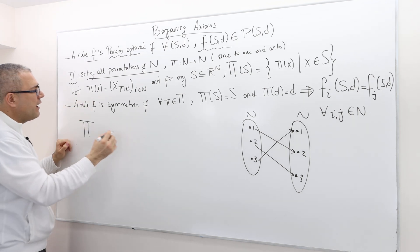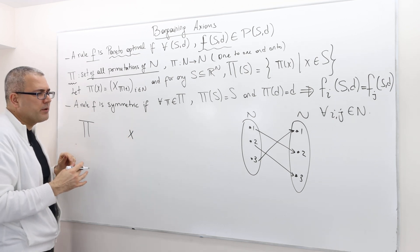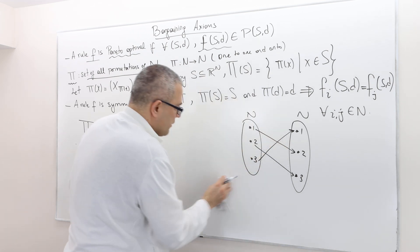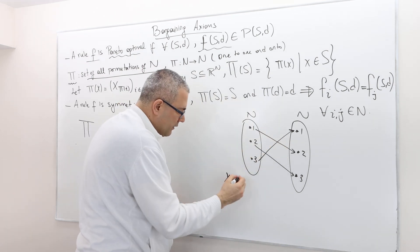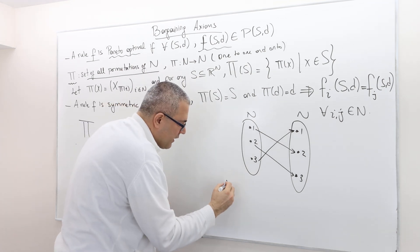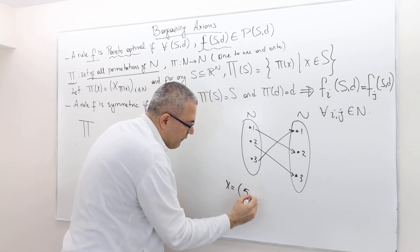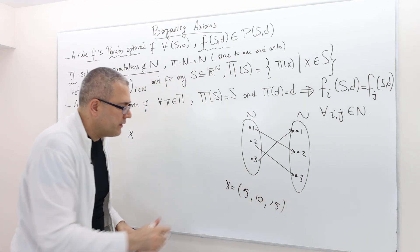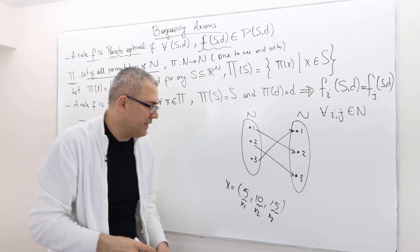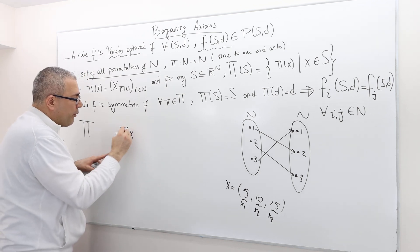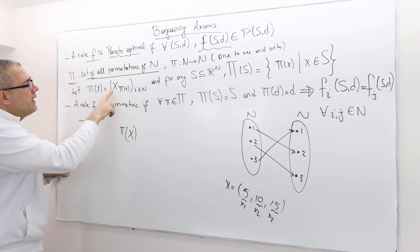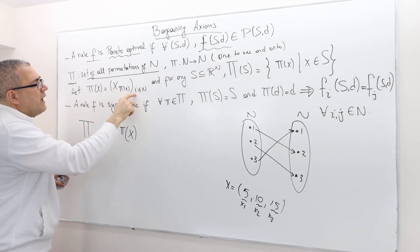Then I define this. X is a payoff vector — so let's say 5, 10, 15. This is what player one gets, player two gets, player three gets. Now I'm going to define the permutation of X. It's simply X of pi(i) for each i in N.